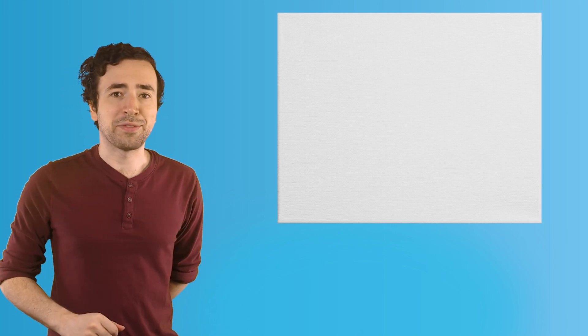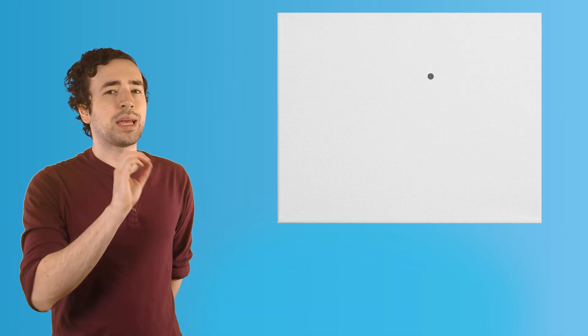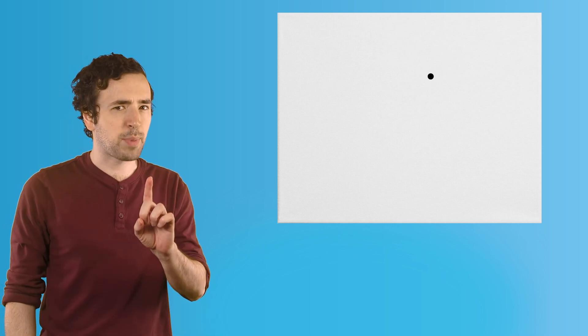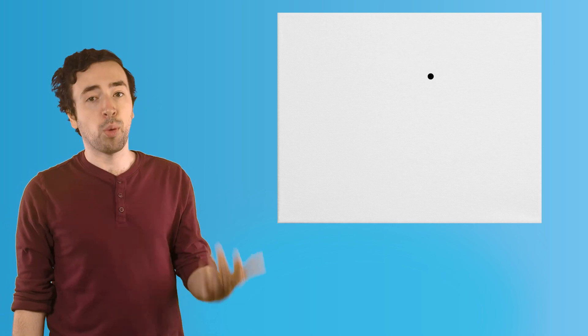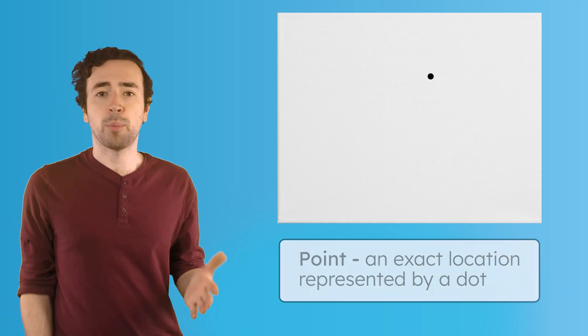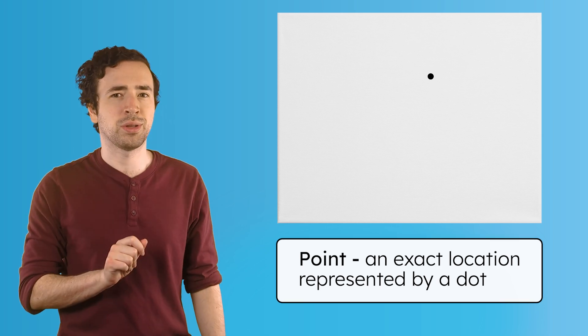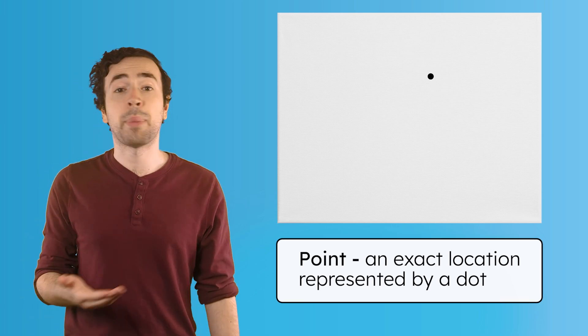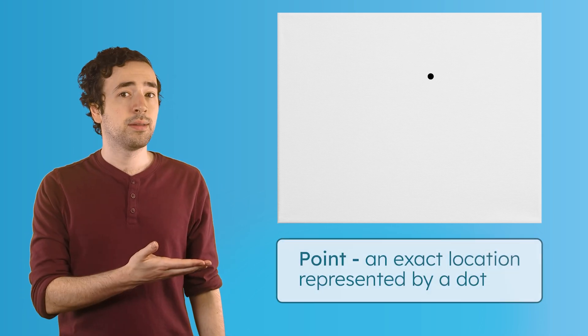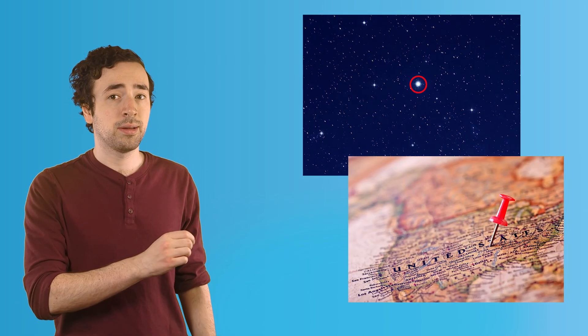We'll be starting today with our own blank canvas. I'll draw a dot to mark an exact spot — just one spot — and call it a point. A point is an exact location represented by a dot. If you've ever seen a star in the night sky, or a pushpin on a map, that's a point.